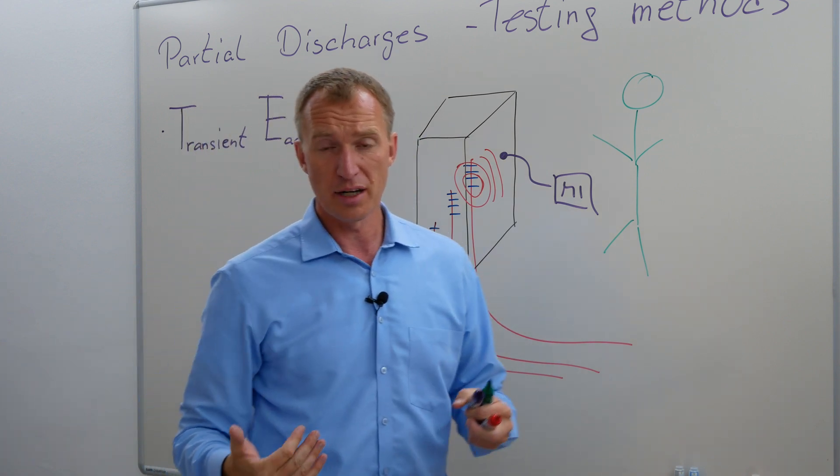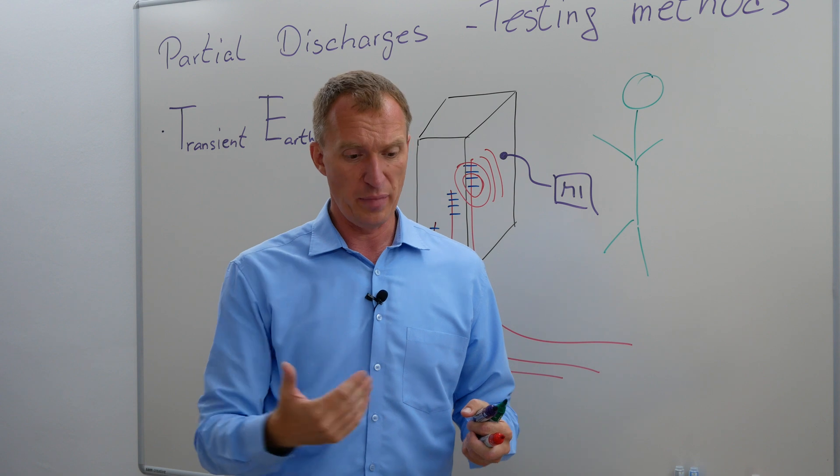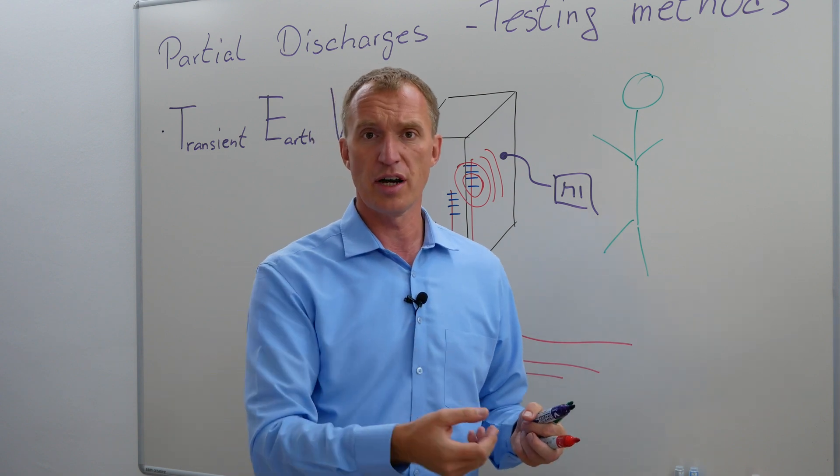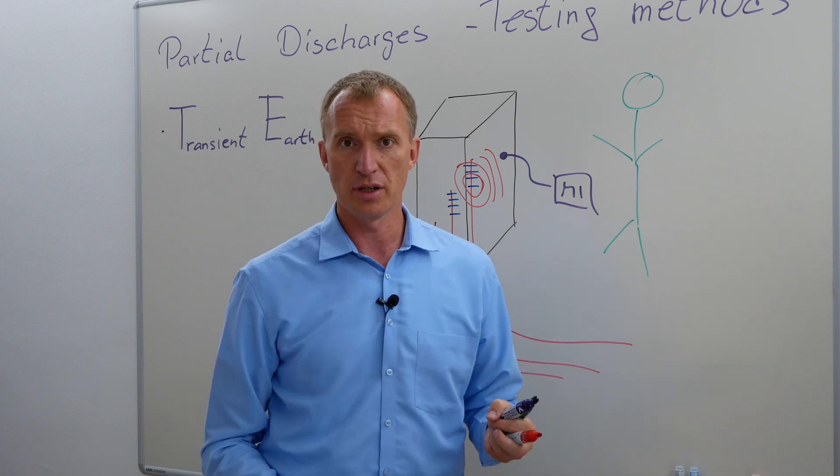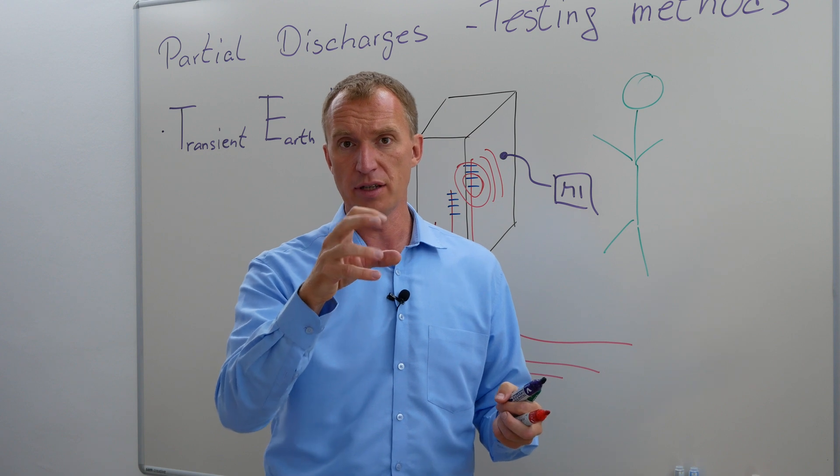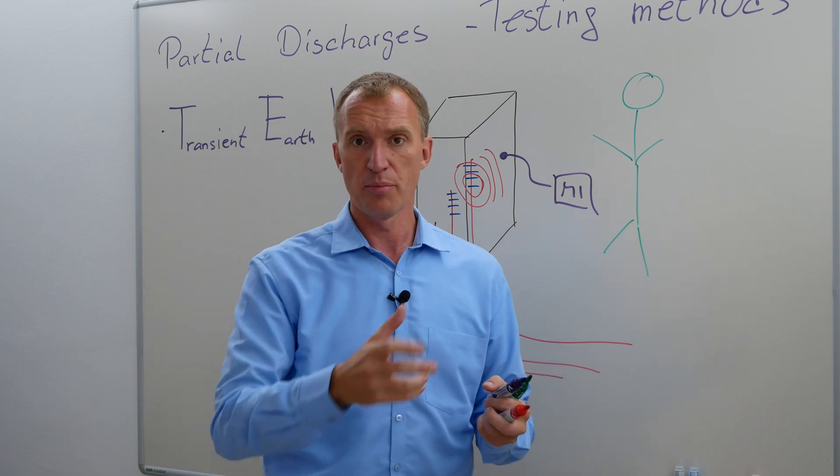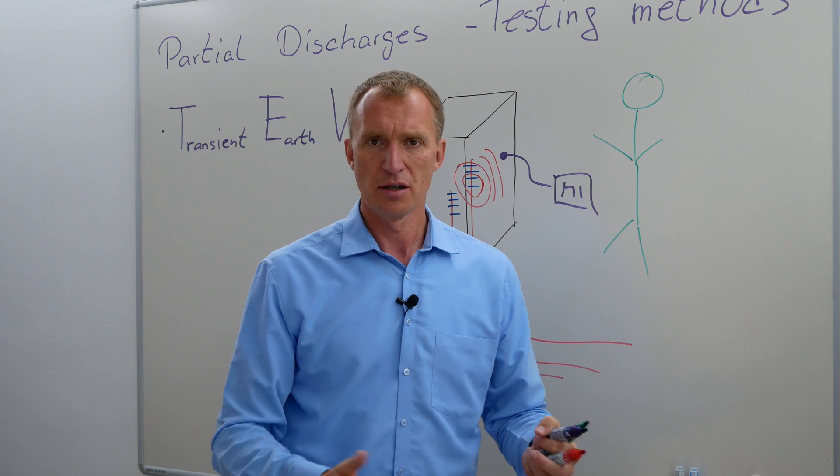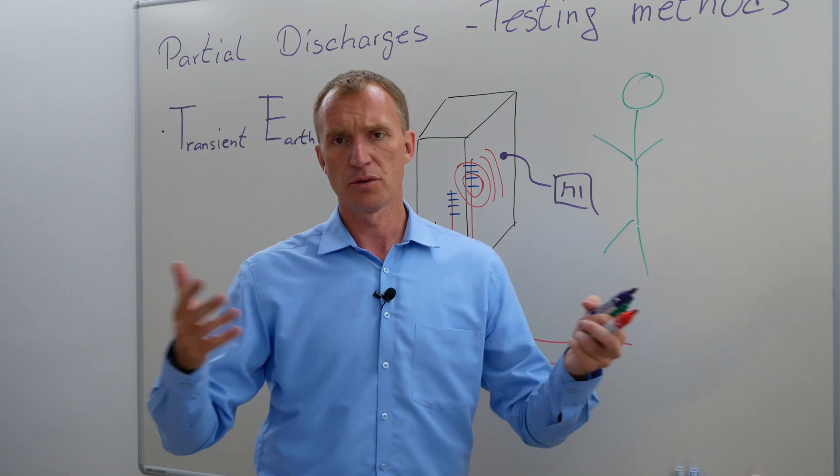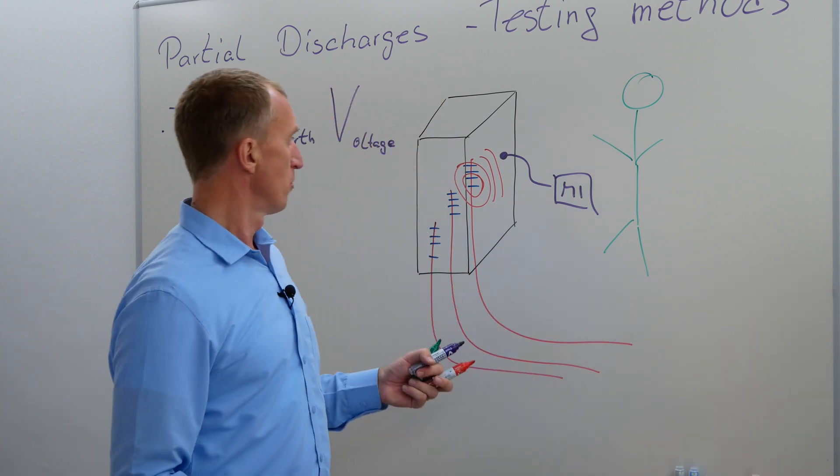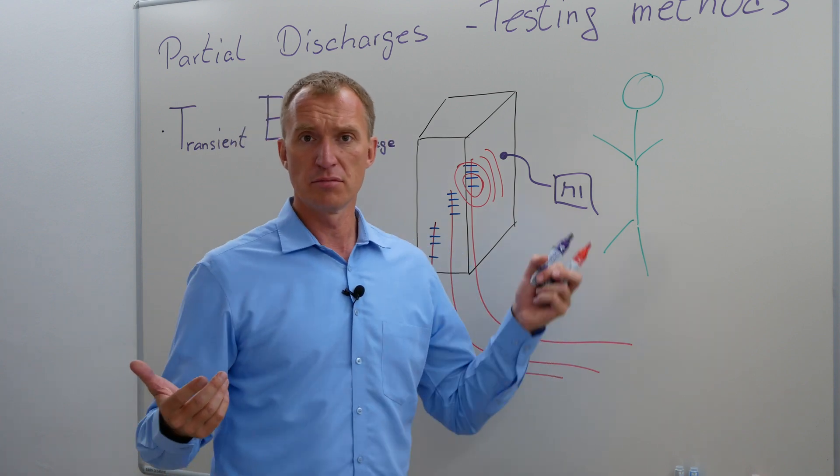If I own a substation and I want to know that, I would make an experiment and say, okay, what happens if I have a big partial discharge on my end termination? How would my TEV, my transient earth voltage sensor, pick that up? Then you have at least a sensitivity check, right? So you can place multiple on there, you can do monitoring. I think it's a pretty good idea to do that.